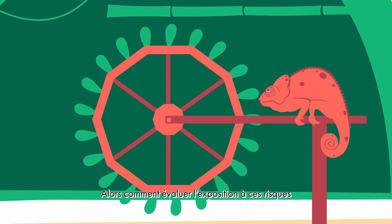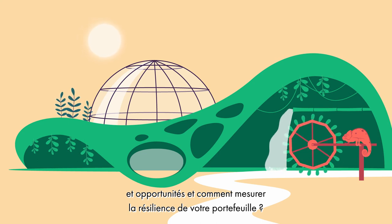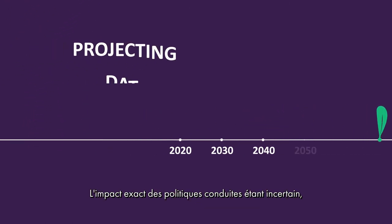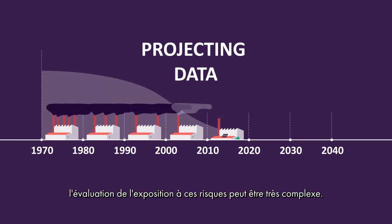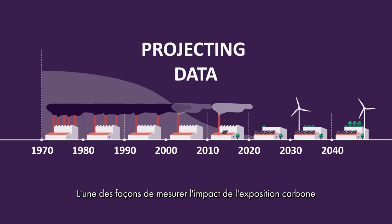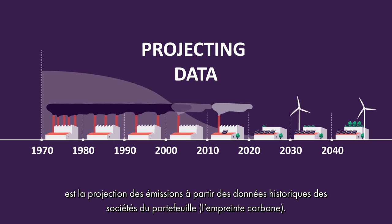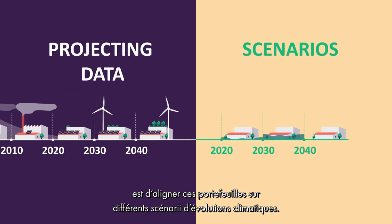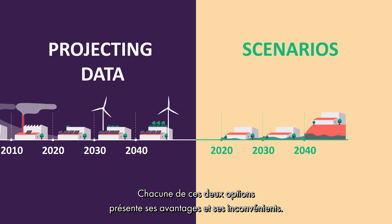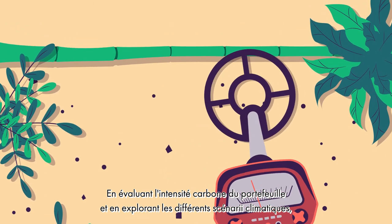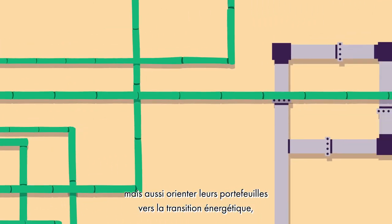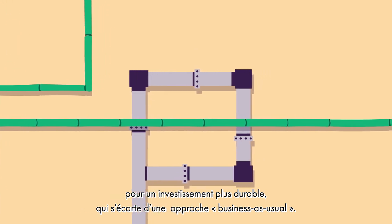So how do you assess exposure to these risks and opportunities and measure the resilience of your portfolio? Both risks and opportunities are impacted by the speed and focus of the transition. Since the exact impact of policy-based measures are uncertain, the assessment of exposure to these risks can be quite complex. One way of measuring the impact of exposure to carbon is through projecting past emissions data of companies in the portfolio. A second way to help investors make better informed investment decisions can be to align those portfolios with climate change scenarios. Both options present their own upsides and downsides. By assessing the carbon intensity of the portfolio and by exploring different climate change scenarios, investors can not only analyze but also tilt their portfolios to support the energy transition and steer away from the business-as-usual approach that squares off against sustainable investing.